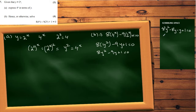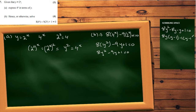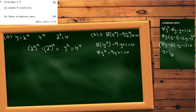So we split to get 8y squared minus 8y minus y plus 1. Taking 8y common from the first two gives 8y(y minus 1), and taking minus 1 common from the last two gives minus 1(y minus 1). Gathering these: (8y minus 1)(y minus 1) equals 0. So y equals 1/8 or y equals 1.